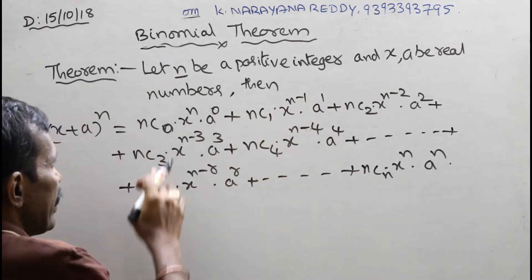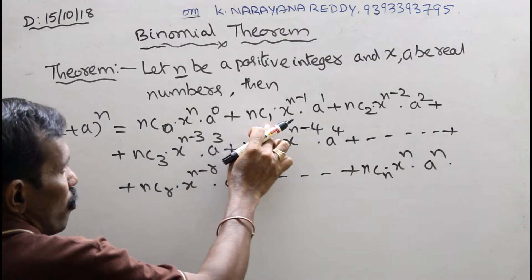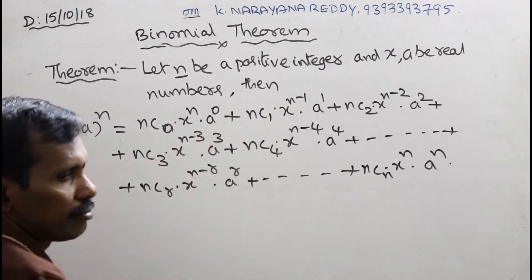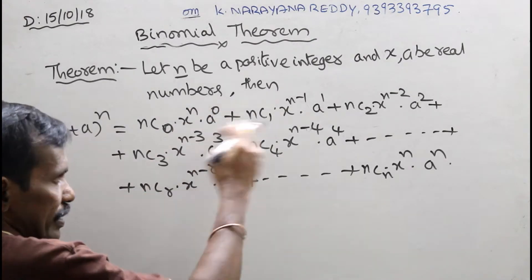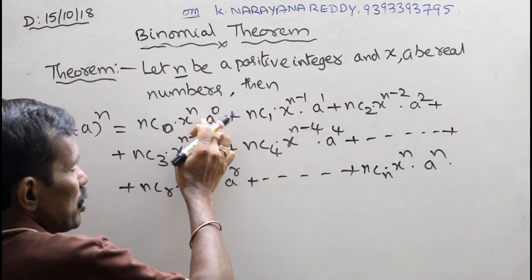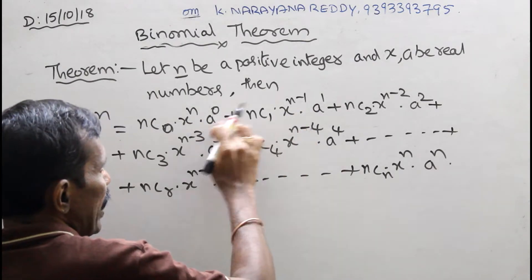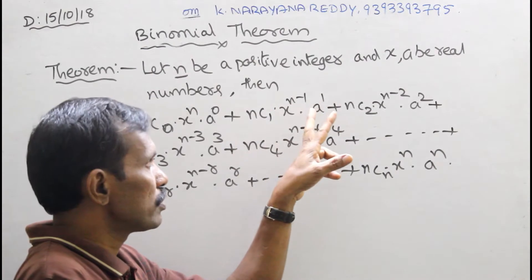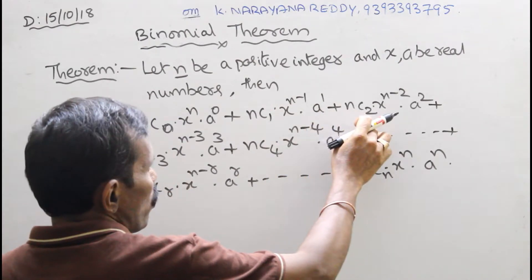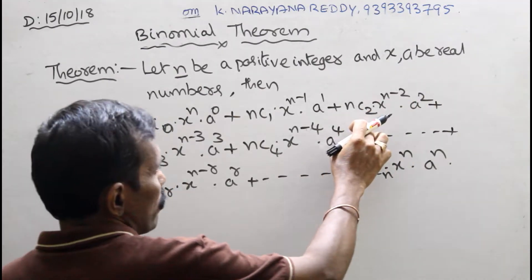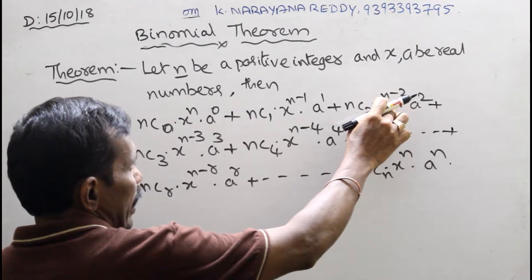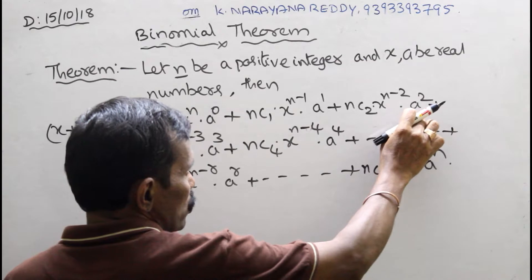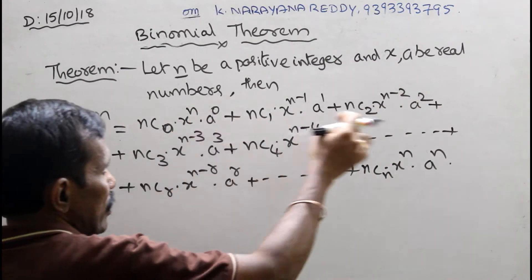The next term is nc1 times x to the power of n minus 1 times a to the power of 1. Observe what is happening: the exponent of x starts at n and decreases, while the exponent of a starts at 0 and increases. In the third term: nc2 times x to the power of n minus 2 times a squared — x is decreasing by 2, a is increasing.